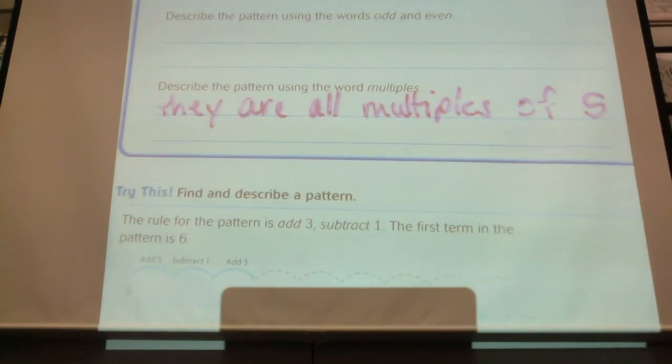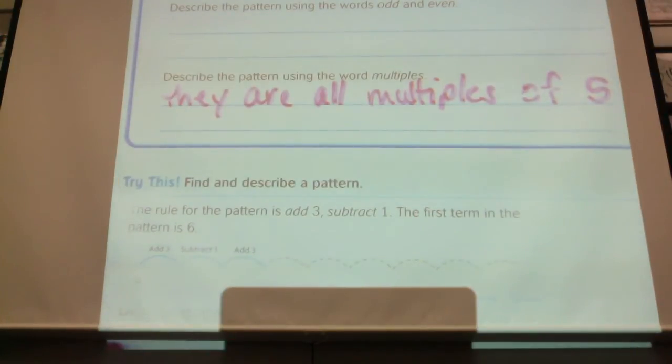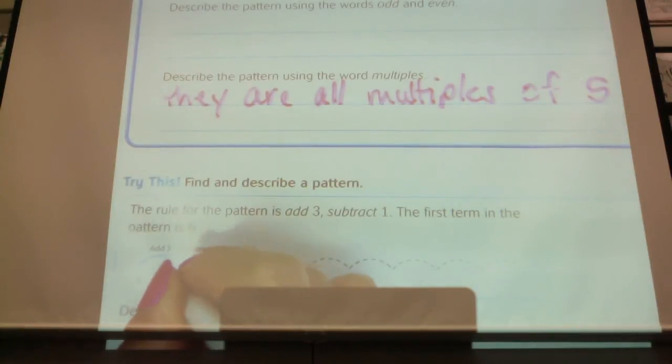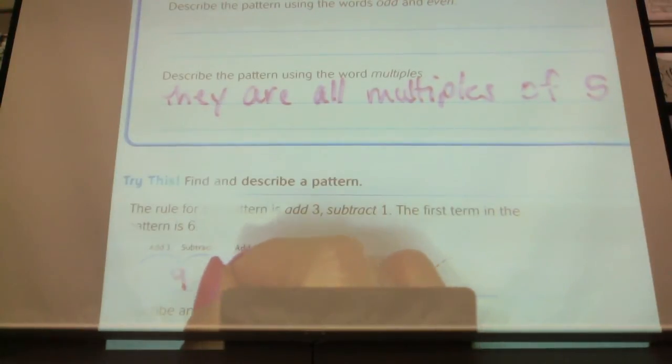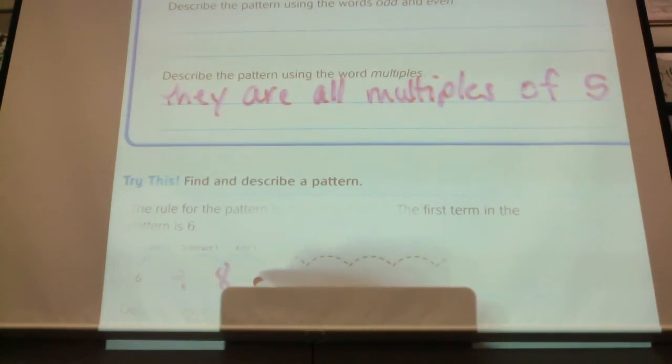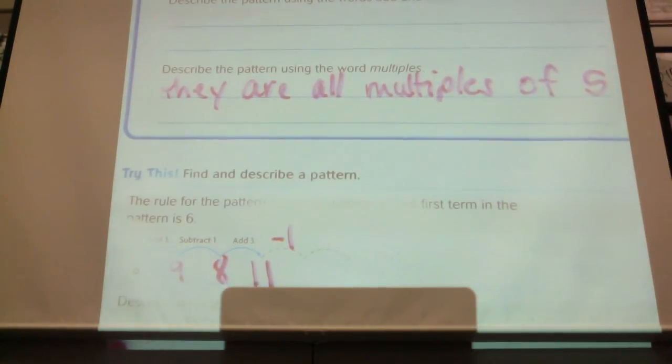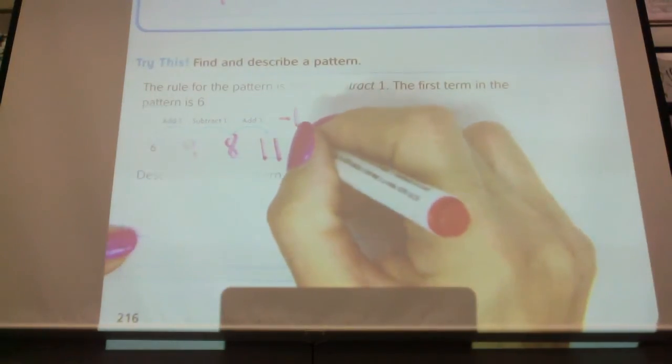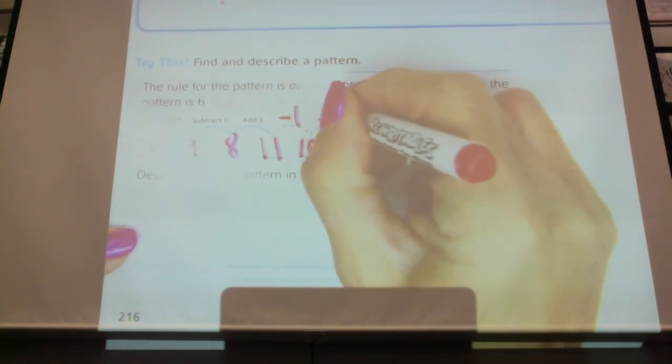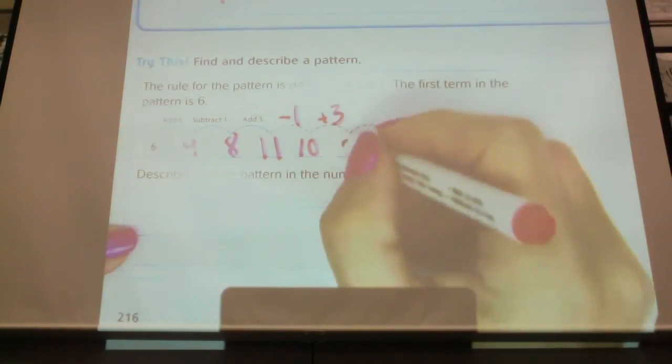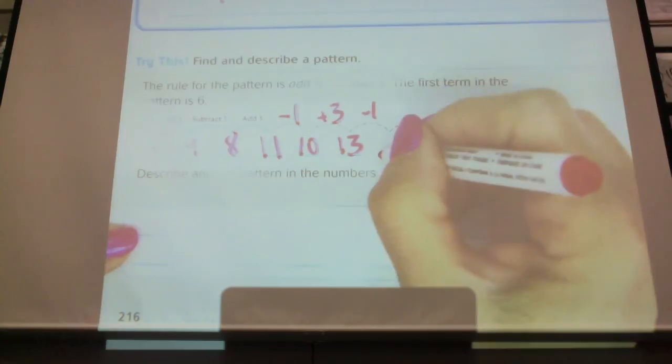The rule for the pattern below is add three, then subtract one. The first term in the pattern is six. So it tells me right here I need to add three. So what's my next number going to be? Nine. Nine. And then it tells me to subtract one. So my next number will be eight. Eight. Then I need to add three. Which is? Eleven. And then I'm going to subtract one. Hold on. Ten. Then I'm going to add three. Which will be? Thirteen. And then I'm going to subtract one, and then I'm going to get twelve.